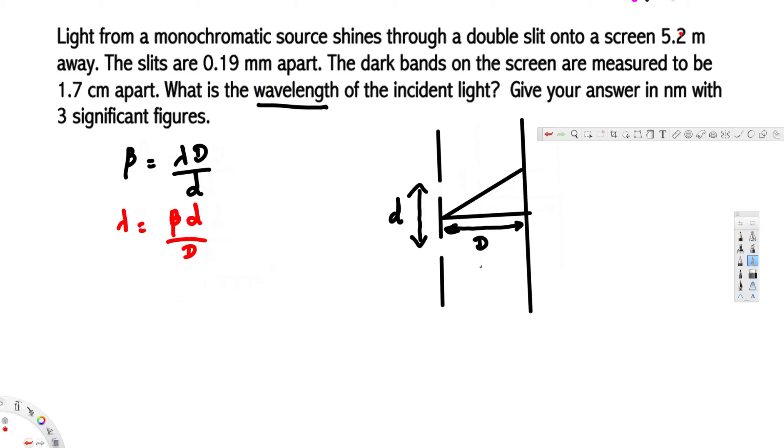Now let's look at the given information. The first one is capital D, from the center to the screen, that is given by 5.2 meters. We have the slit separation, that is given by 0.19 millimeters. The dark bands on the screen are measured to be 1.7 centimeters apart. This is the fringe spacing, beta, which is equal to 1.7 centimeters.